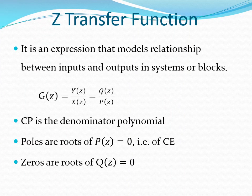A Z-transfer function is a Z-transform expression that models the relationship between an output and an input of a system or of a block. In general, it is expressed as G(z) equals Y(z) over X(z) where Y(z) is the output and X(z) is the input. It can be manipulated so that it becomes a ratio of two polynomials in the form Q(z) over P(z). The characteristic polynomial is the denominator polynomial, that is P(z). Poles are roots of P(z) equals 0, i.e. they are roots of the characteristic equation. Zeros are roots of the expression Q(z) equals 0.